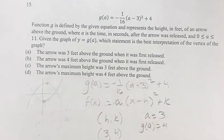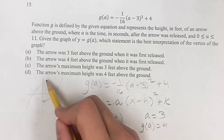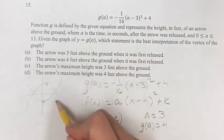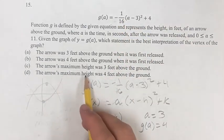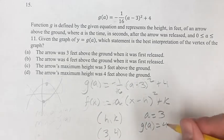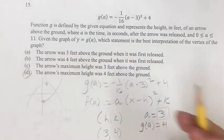So the arrow's maximum height, which again, this is what we're saying, the vertex is the maximum or the minimum, but since there's a negative, this is opening downward, so it's the maximum. The maximum height was 4 feet off the ground, and we know now that it would be at 3 seconds. So the answer is D.